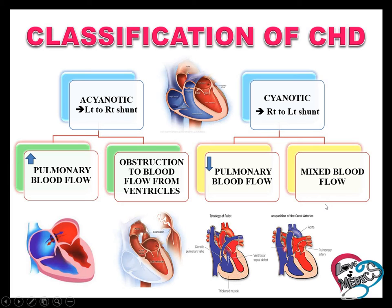Classification of congenital heart disease: it may be acyanotic or cyanotic. Acyanotic involves a left-to-right shunt — blood passes from the left side to the right side of the heart — increasing pulmonary blood flow. Another acyanotic condition is obstruction to blood flow from the ventricle.